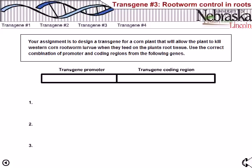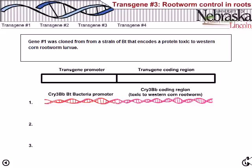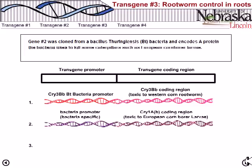The third assignment: design a transgene for a corn plant that will allow the plant to kill western corn rootworm larvae when they feed on the plant root tissue. We have three gene options. Gene one was cloned from a strain of BT that encodes the protein toxic to the western corn rootworm larva.